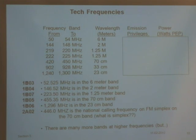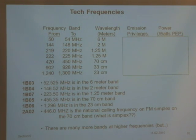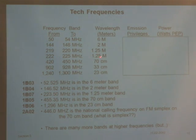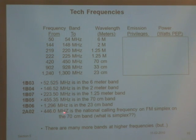Now I'll get specific. These are the bands you'll be licensed to operate on. The exam questions will say something like: 'If you're in ITU Region 2 — the Americas — and you're on 52.52 megahertz, what band are you in?' The answer is the 6-meter band. If you're on 146.52 megahertz, you're in the 2-meter band. There's also the 1.25-meter band and the 70-centimeter band, and 446 megahertz is the national calling frequency for FM simplex on the 70-centimeter band.